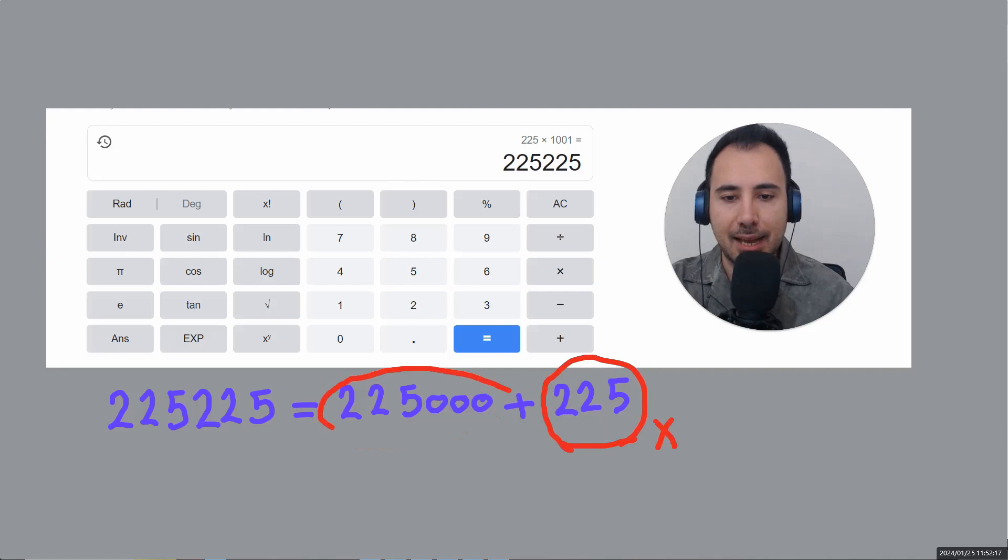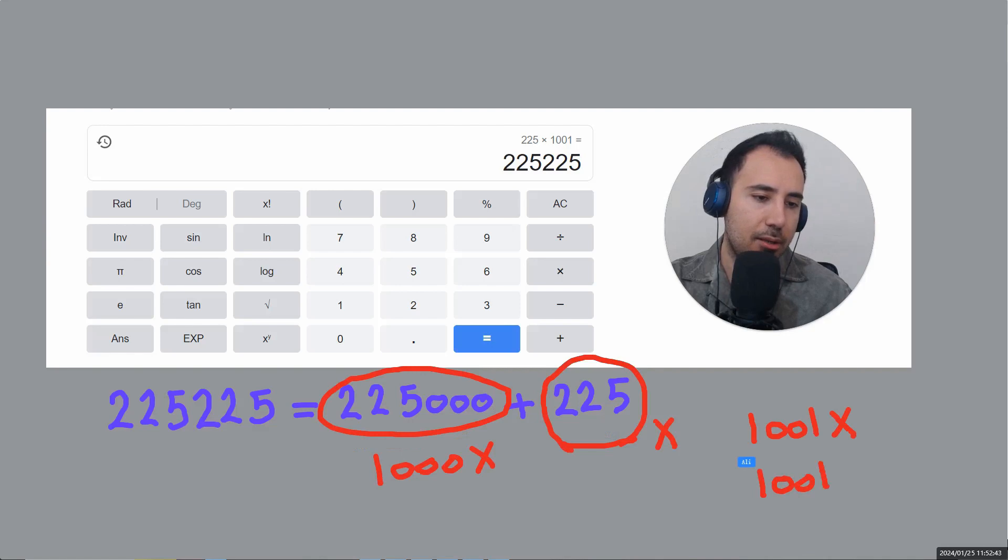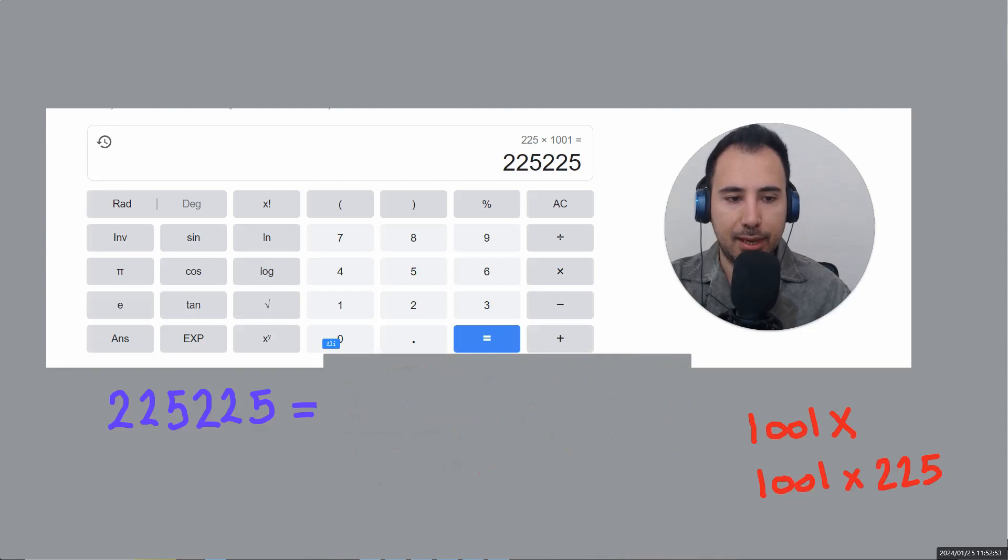...this is a thousand x, right? So now if I go and add them all up, one thousand x plus one x is equal to a thousand and one x. And what was x? x was two two five. So all of this is the same as one thousand and one multiply by two two five. So I'm gonna just clean what is in between and let's see what we have. So two two two five is equal to a thousand and one multiplied by two two five.